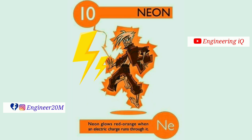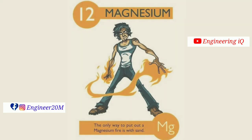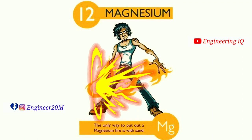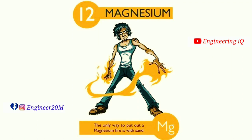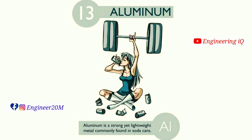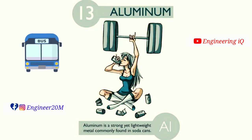Magnesium: atomic number of magnesium is 12. The only way to put out a magnesium fire is with sand. It is denoted by Mg. Aluminum: atomic number of aluminum is 13. Aluminum is a strong yet lightweight metal commonly found in soda cans. It is denoted by Al.